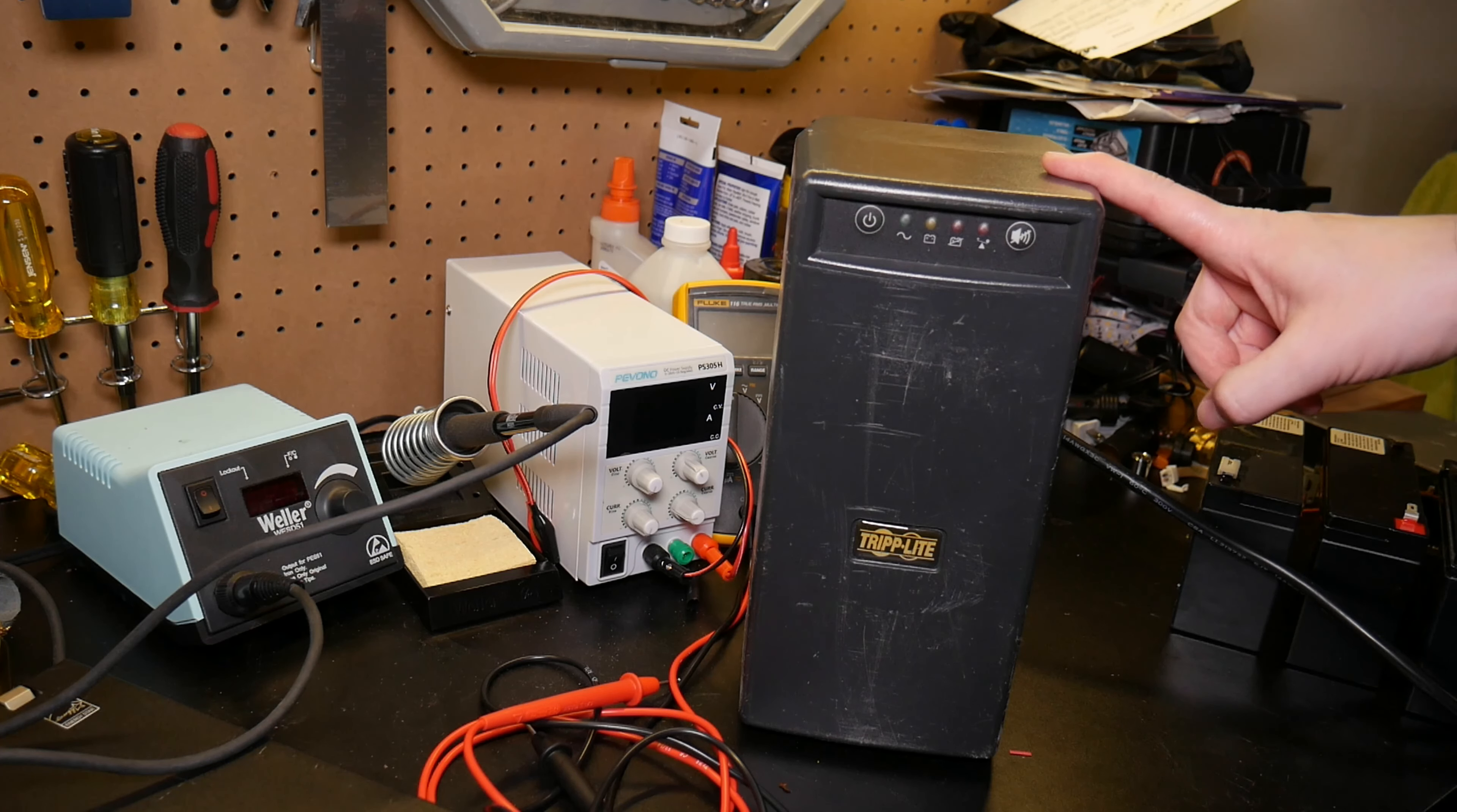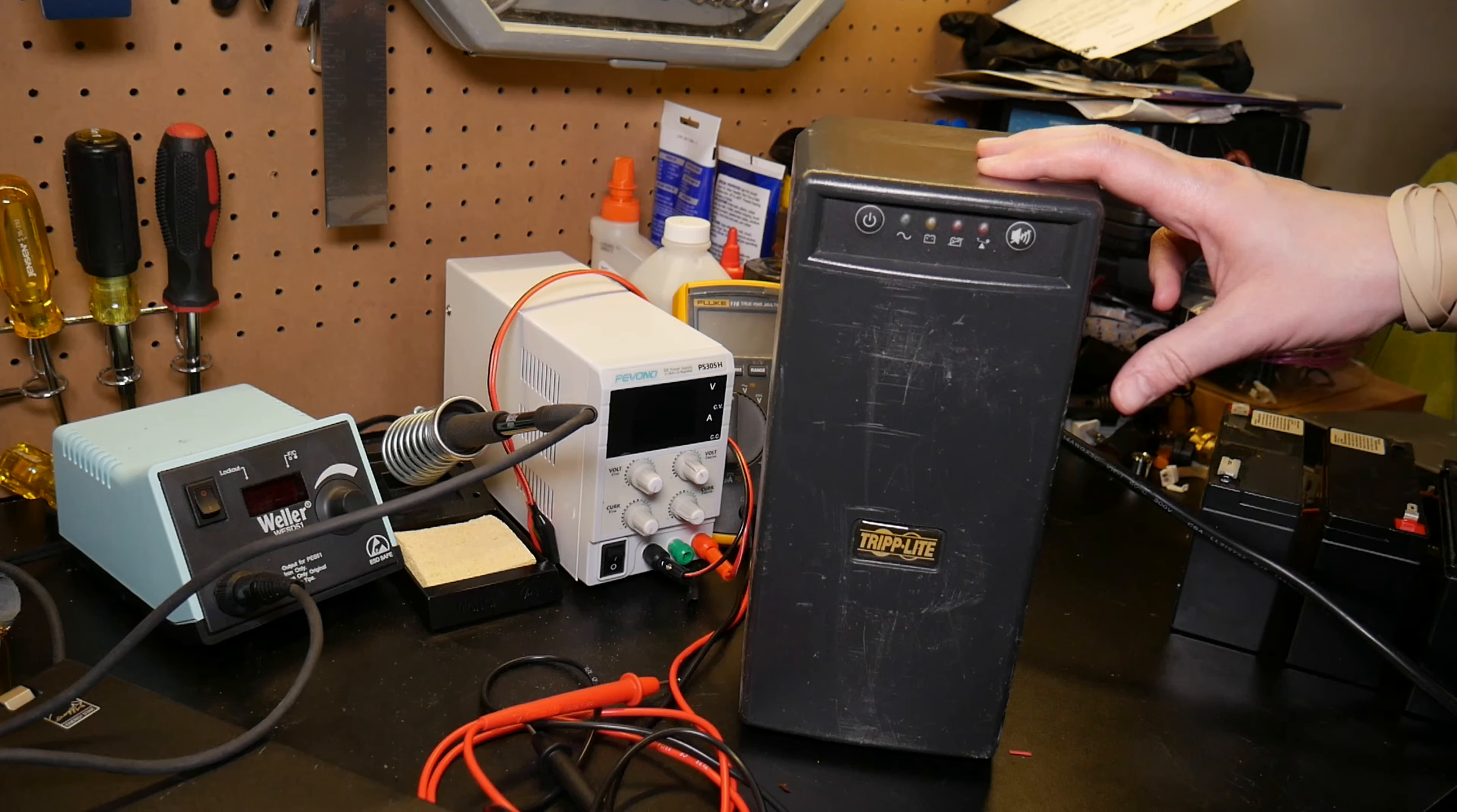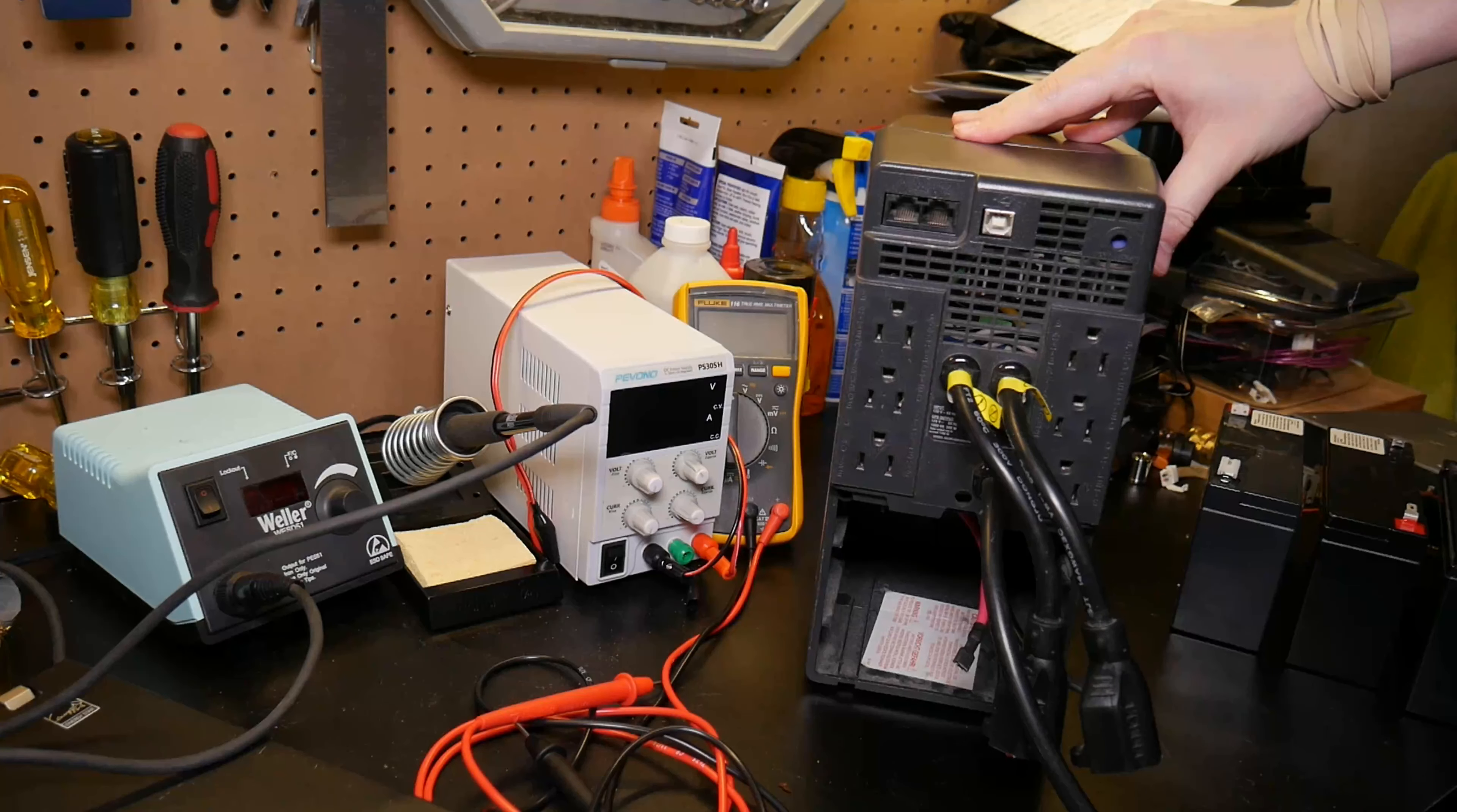This should be a quick one. This is a Tripp Lite Omni VS 1000, a 500 watt UPS. It does not power on. I've actually had this in my possession for probably about a decade at this point, but it doesn't power on because the battery that I had in here died quite a while ago.